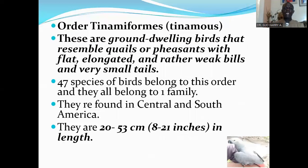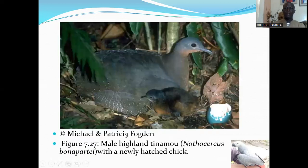Order Tinamiformes consists of the tinamous. These are ground-dwelling birds that resemble quails or pheasants, with flat, elongated bills and very small tails. 49 species of birds belong to this order and they all belong to one family. They are found in Central and South America. They are 20 to 53 centimeters in length. Here is the male highland tinamou with a newly hatched chick.